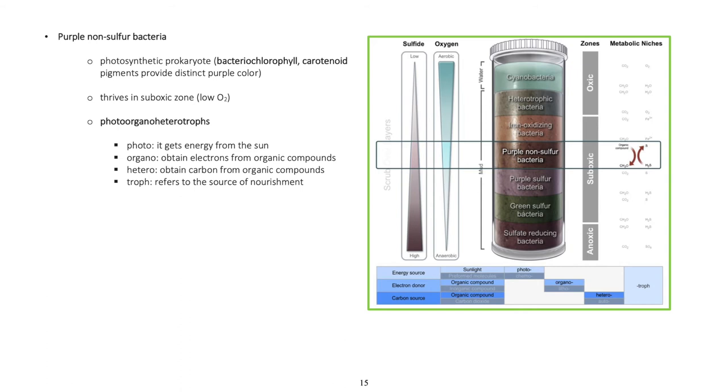Purple non-sulfur bacteria: Photosynthetic prokaryote with presence of bacteriochlorophyll and carotenoid pigments which provide distinct purple color. Thrives in suboxic zone with low oxygen. Photoorganoheterotrophs - photo: gets energy from the sun, organo: obtain electrons from organic compounds, hetero: obtain carbon from organic compounds, troph: refers to the source of nourishment.